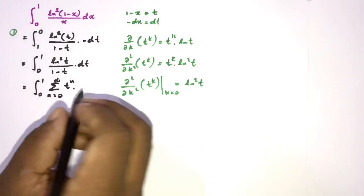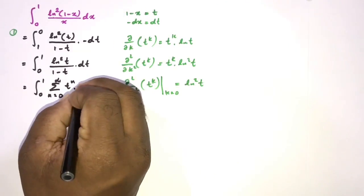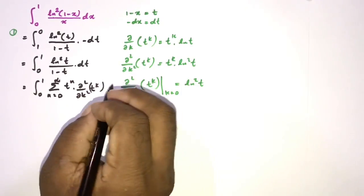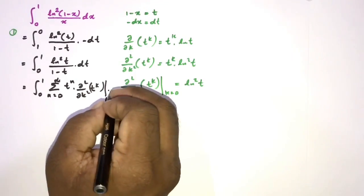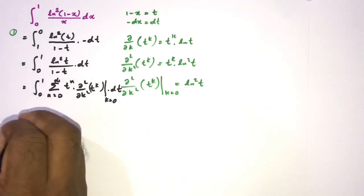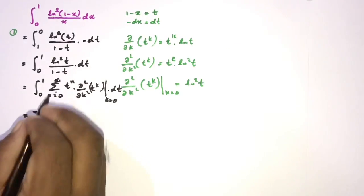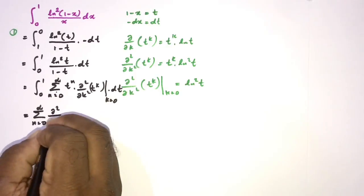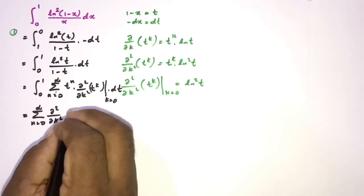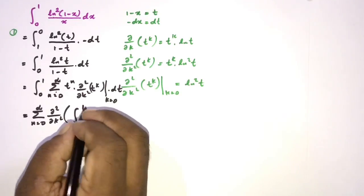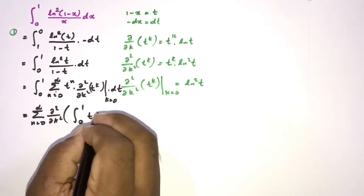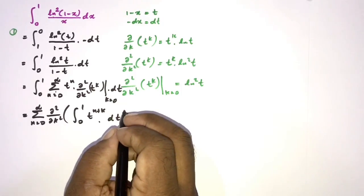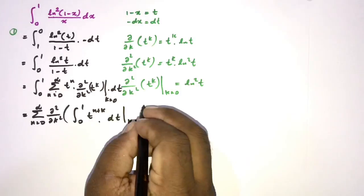We can therefore write the integral as the second-order partial derivative with respect to k, evaluated at k=0, of the sum Σ(n=0 to ∞) ∫₀¹ t^(n+k) dt.